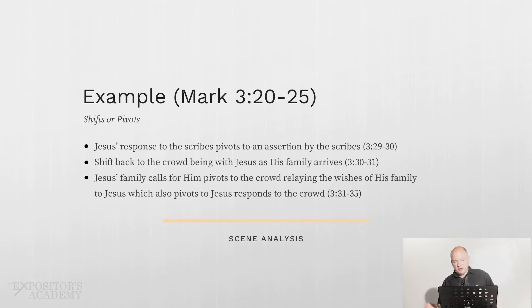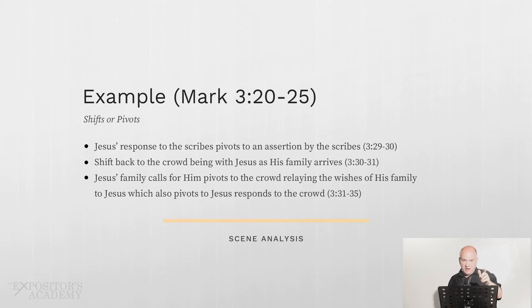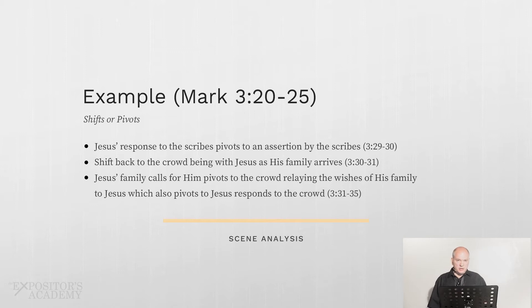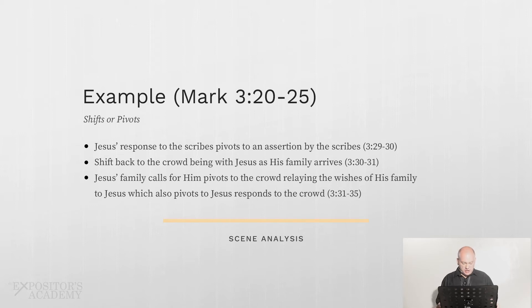Then there's another shift — a major one — to the scribes, with no mention of Jesus's family. The scribes assert a falsehood, which pivots to Jesus's response, and Jesus's response pivots back to another assertion by the scribes. Then there's a shift back to the crowd being with Jesus as his family arrives. The family calls for him, which pivots to the crowd relaying his family's wishes to Jesus, which pivots to Jesus responding to the crowd — not directly to his family.